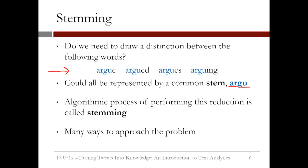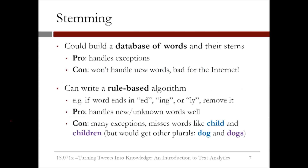The algorithmic process of performing this reduction is called stemming. There are many ways to approach the problem. One approach is to build a database of words and their stems. A pro is that this approach handles exceptions very nicely, since we have defined all of the stems. However, it won't handle new words at all, since they are not in the database. This is especially bad for problems where we're using data from the internet, since we have no idea what words will be used.